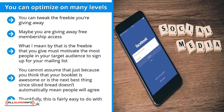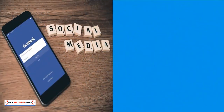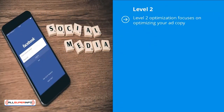Thankfully, testing freebies is fairly easy on Facebook — you simply run different ads that offer different premiums. Level two optimization focuses on optimizing your ad copy.